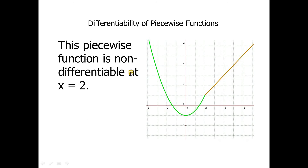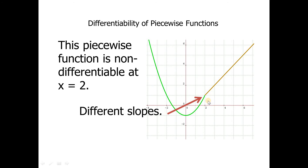This second piecewise function is also non-differentiable at x equals 2, even though the function is continuous there and they have the same y value. The slopes are different — there's a sharp corner here. One piece comes in a bit steeper and the other has a slope of about 1, so with a sharp corner there is no derivative.